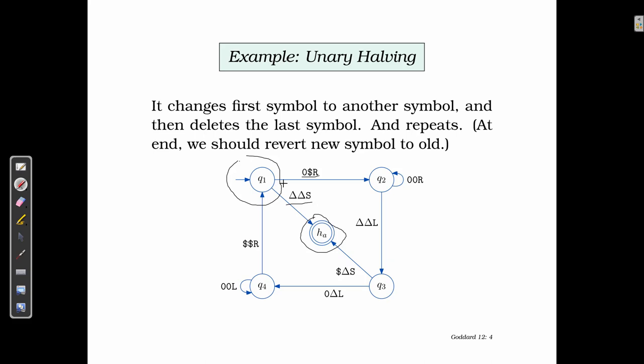And then it moves to the right. It also changes state to q2. When it's in q2, it keeps looking for zeros and keeps writing zeros there, and then it moves to the right.